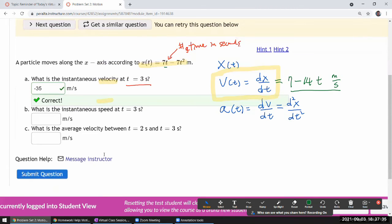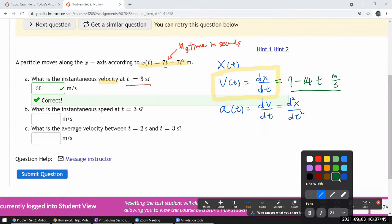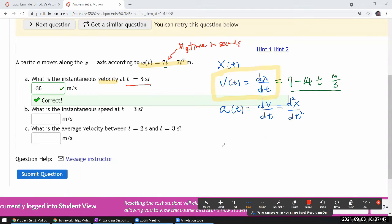And when it's asking instantaneous speed, that's getting at the definition of speed. And so one of those things that we as physicists do, speed and velocity in everyday English, they are synonyms. In physics, they are not. Speed means it's the absolute value of velocity. It's the magnitude of velocity without regard to sign. So it's just going to be 35.